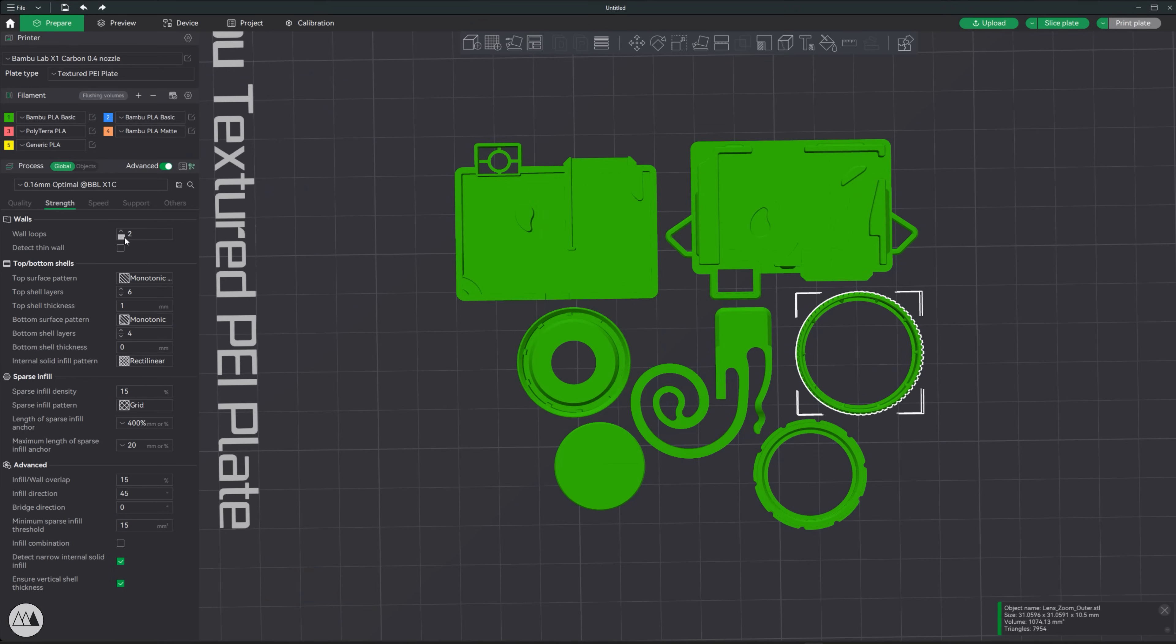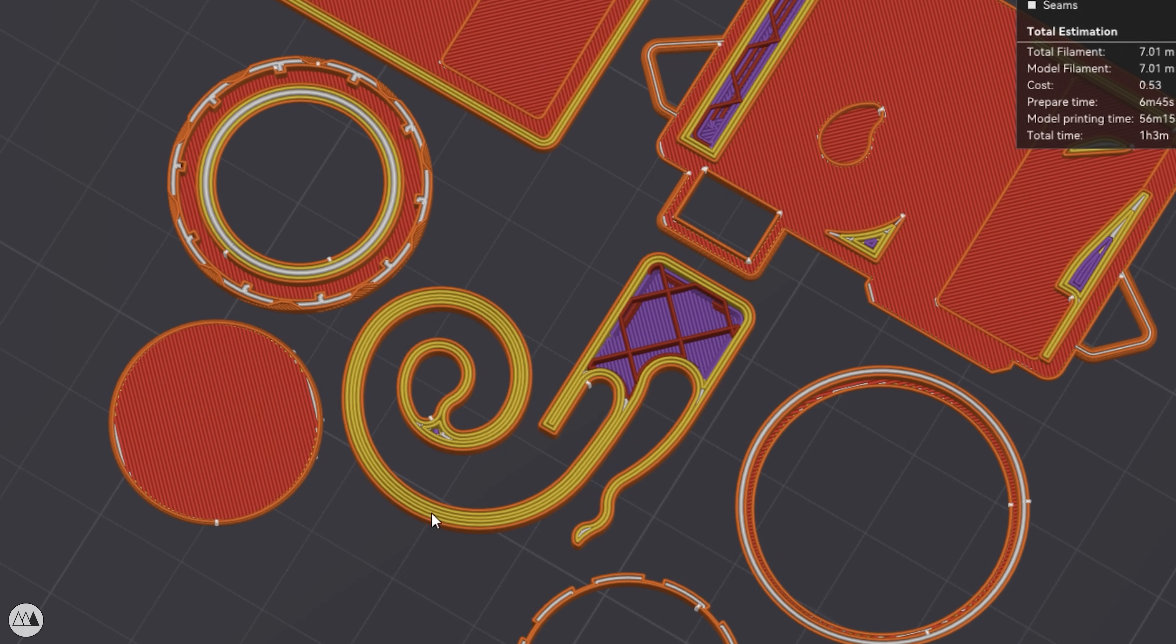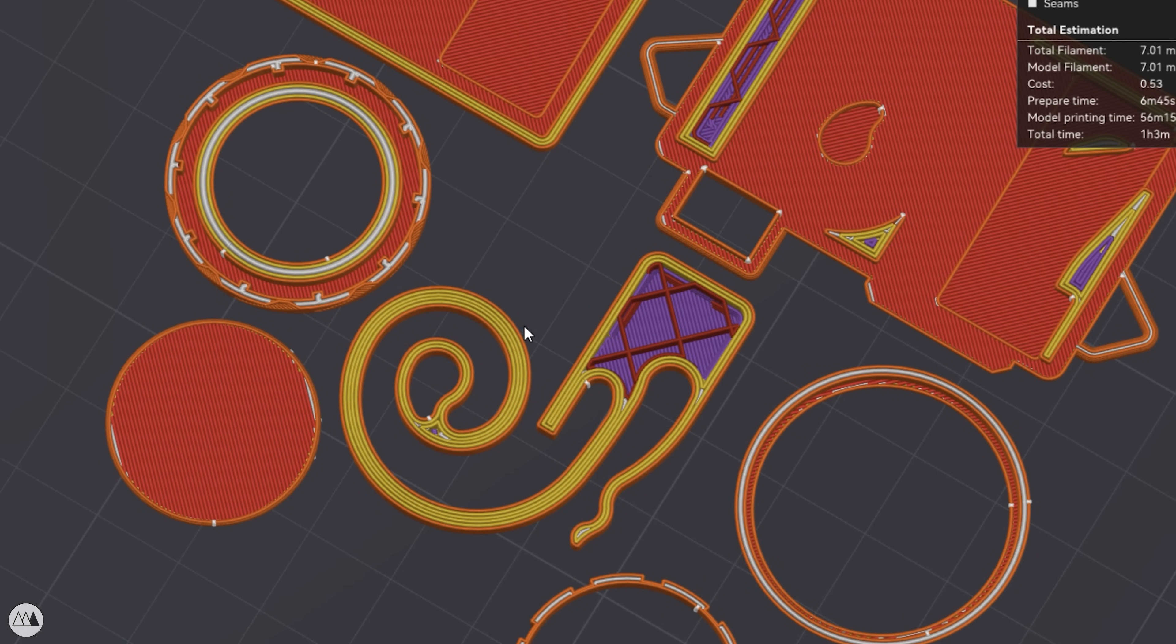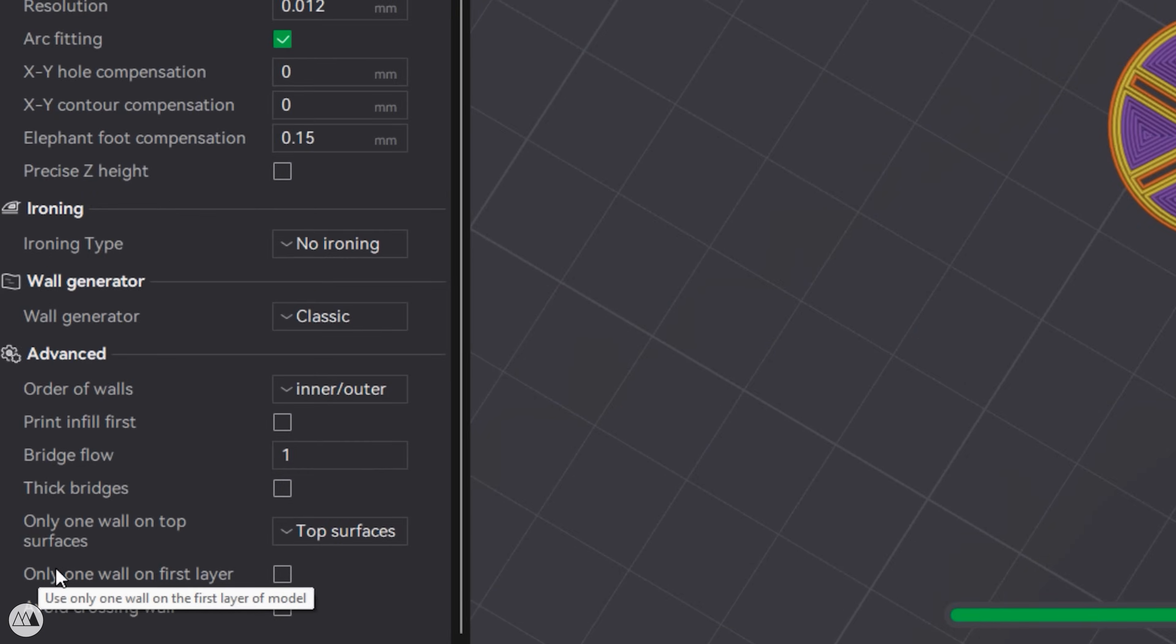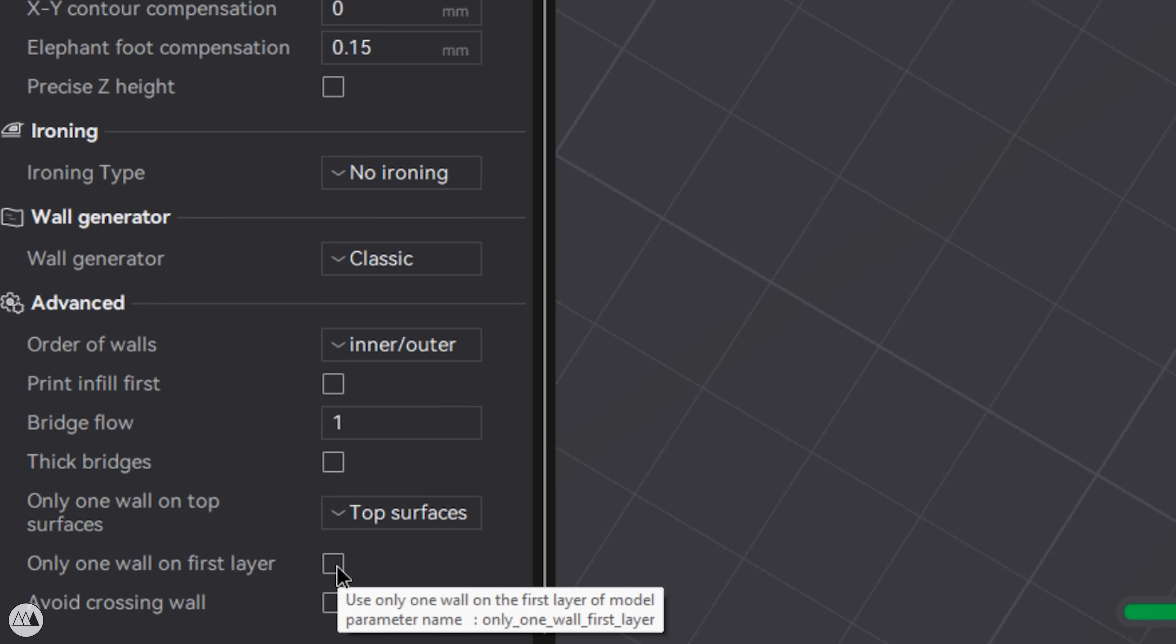I'll just increase the wall count to three perimeters, ensuring that the spring of the trigger here prints solid and so all the parts are fairly robust. I also like to enable this setting to have just one wall on the first layer for cleaner graphics, and using the Arachne wall generator also gives me cleaner walls overall.